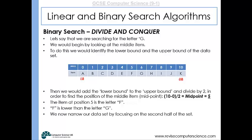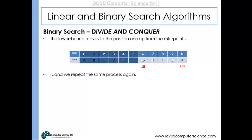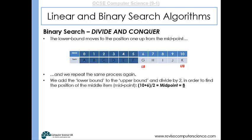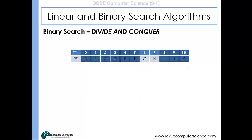We're looking for G, and F is lower than G alphabetically, so we narrow the search to the top half of the array. All data from index 0 to 5 is removed. The lower bound moves up to position 6, with the upper bound still at 10. We repeat the process: 10 plus 6 equals 16, divided by 2 gives a midpoint of 8. We compare G with the item at index 8, which is I. Since I is higher than G alphabetically, we remove index 8 and above.